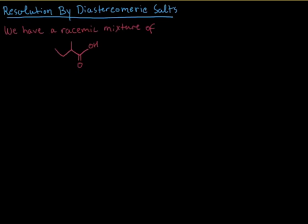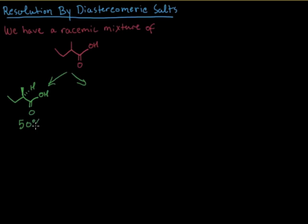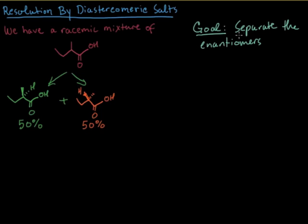We're going to start with this racemic mixture of this compound right here. What that means is we've got 50% of each of the two enantiomers. So let's draw those real quick. There's the first one — we've got 50% of that. And then here's the second one. I just need to make sure I switch the stereocenter, so now the hydrogen's there and the methyl group's back here. 50% of that.